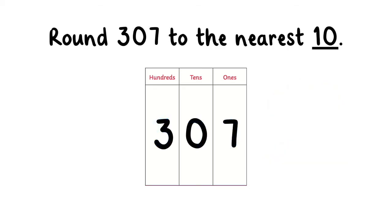Try it yourself! Round 307 to the nearest tenth. 307 rounded to the nearest tenth is 310.